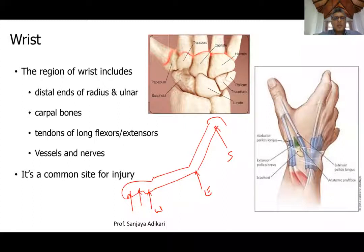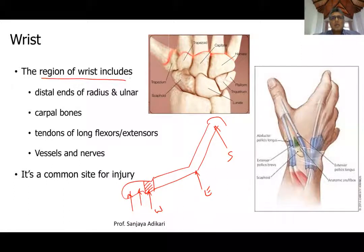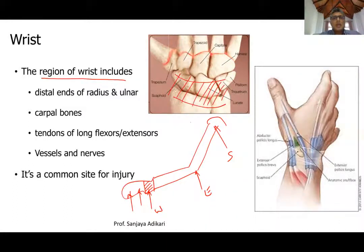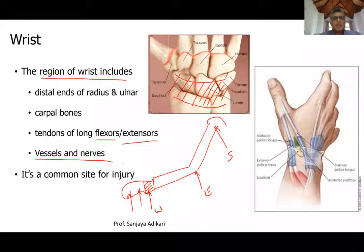When you say wrist, it's not merely the wrist joint — it is the area around the wrist joint, the region of the wrist. The region of the wrist includes the carpal bones and the distal end of the two forearm bones, radius and ulna. In the region of the wrist, you will find in front and behind long flexor and extensor tendons, as well as vessels and nerves.